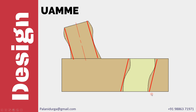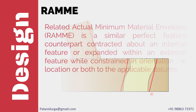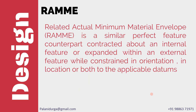Hence this is an example of the unrelated actual minimum material envelope of the internal feature. The second type is the related actual minimum material envelope. This is a similar perfect feature counterpart contracted about an internal feature or expanded within an external feature, while constrained in orientation or in location or both to the applicable datums.